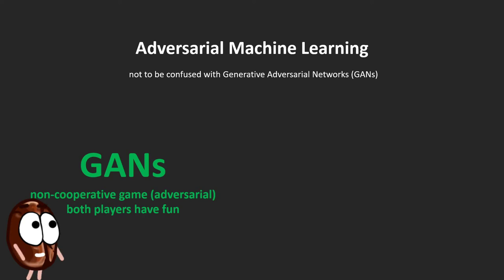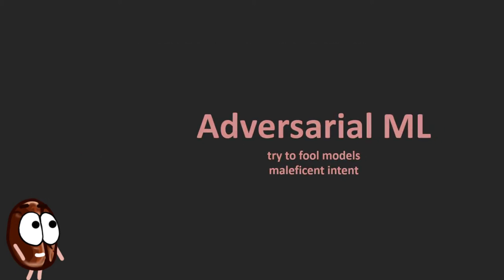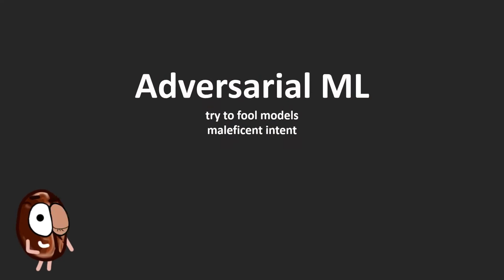On the other side, adversarial learning is the set of techniques that try to fool models by providing deceiving input, so there is a certain malevolence to the whole thing. In this video, we will focus on these bad boys here, and let's start with a notorious adversarial example.